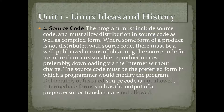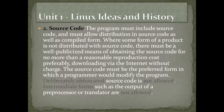Source code: the program must include source code and must allow distribution in source code as well as compiled form. Where a product is not distributed with source code, there must be a well-publicized means of obtaining it. Basically, source code should be available for that program if you declare it as open source.